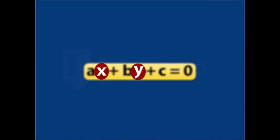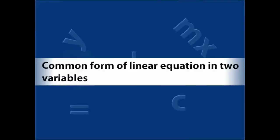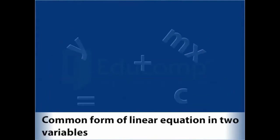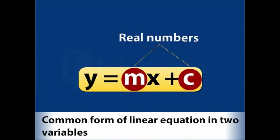You may know that a linear equation in two variables, when shown on a graph, always produces a straight line. A common form of a linear equation in two variables, say x and y, is y equal to mx plus c, where m and c are real numbers.